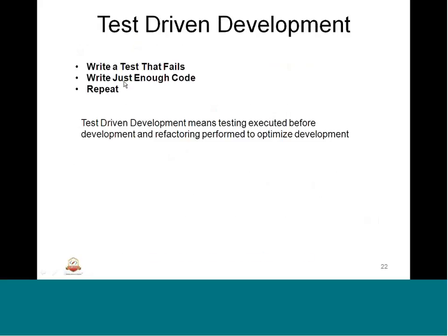The next topic is test-driven development, where we write tests for a specification and then develop the code against those tests. The project is test-oriented — we write a test case that fails, write just enough code to fix that failure, and repeat until the complete testing is taken care of and development is done.